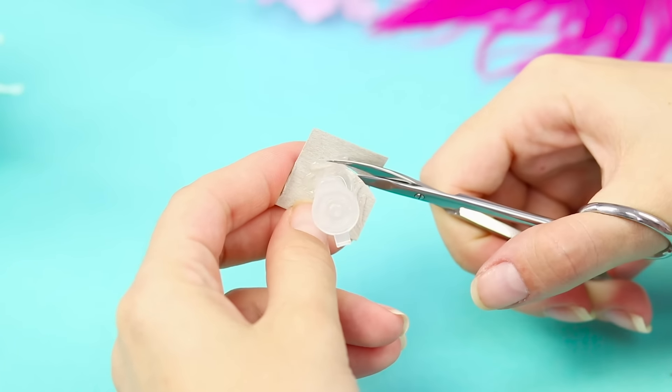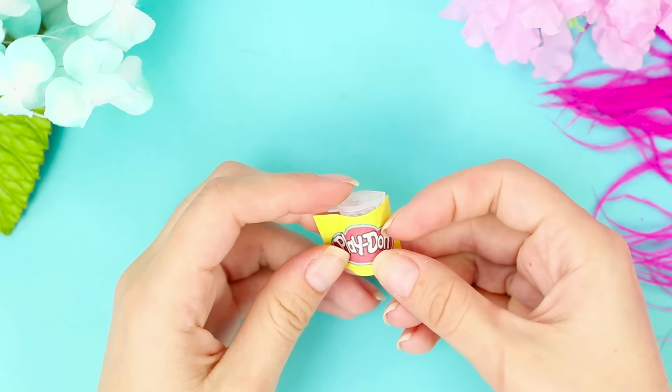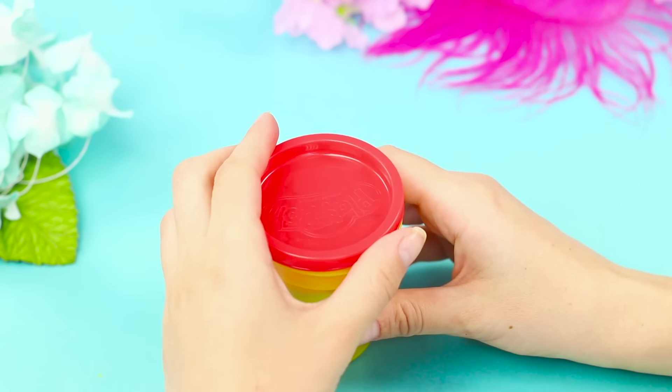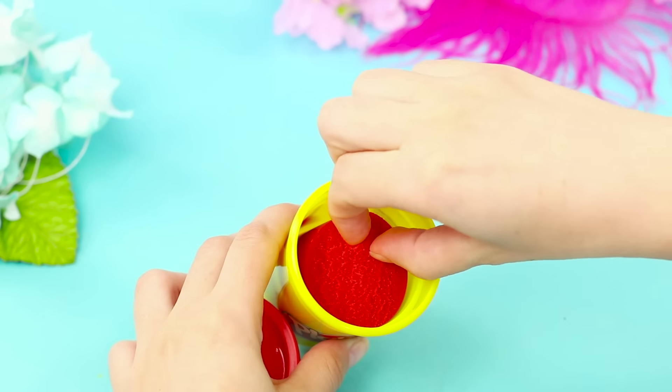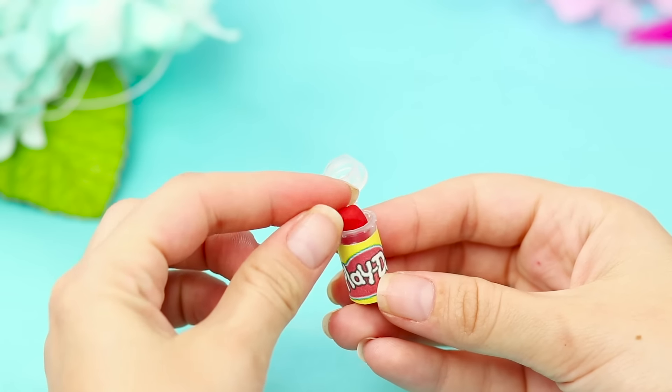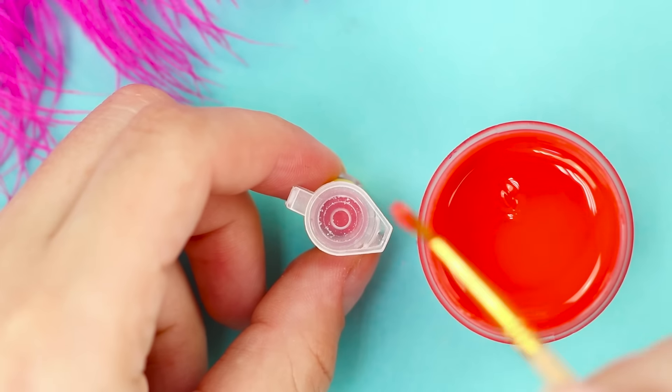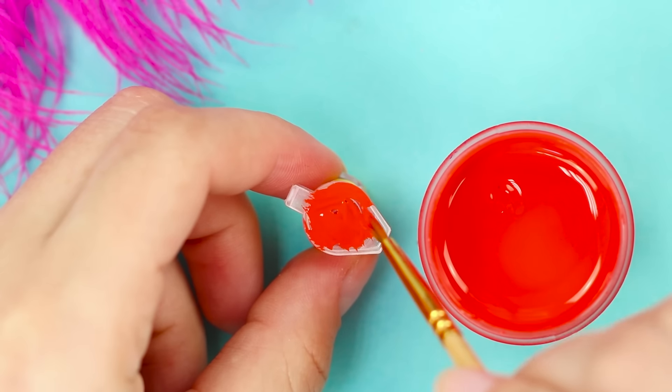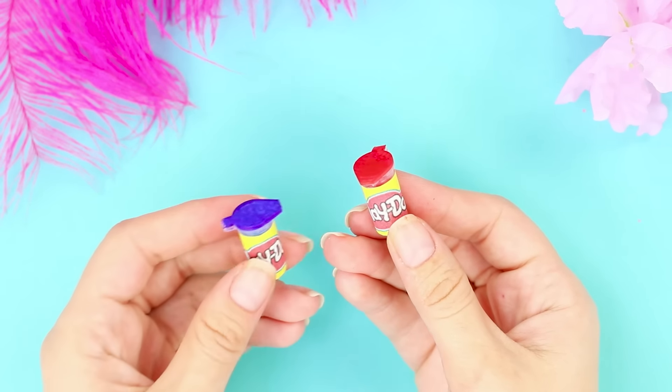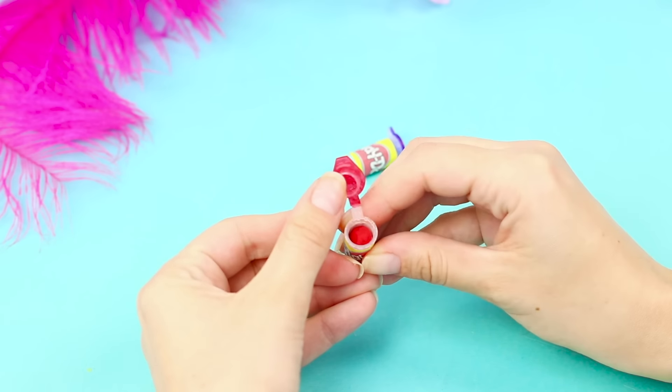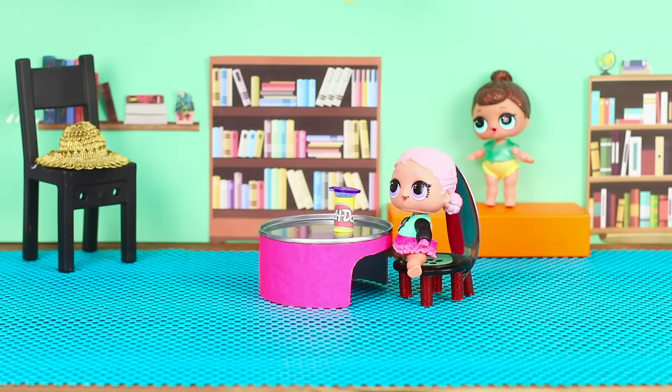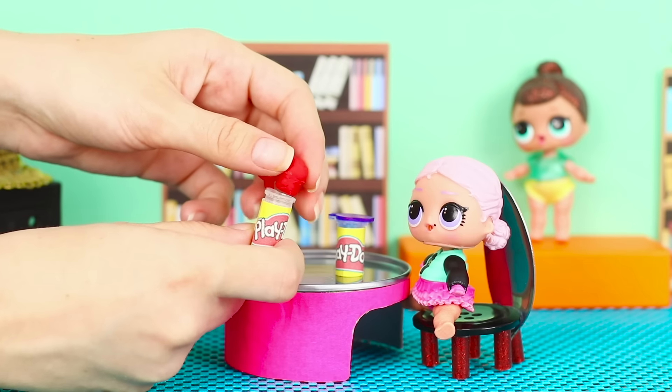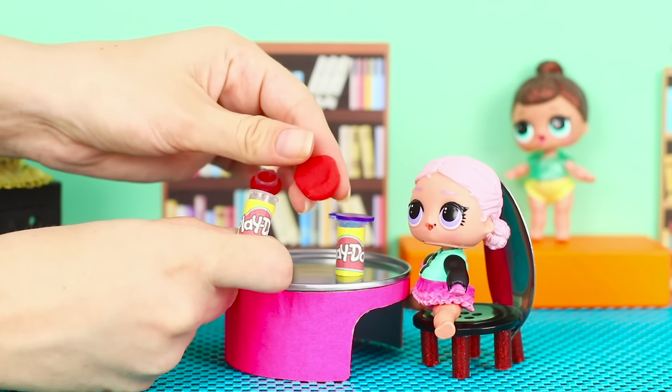When the glue dries, carefully cut the cardboard along the outline. Glue the sticker to the jar. Fill it with Play-Doh. Paint the cap the color of the Play-Doh so it looks just like the real container. Small supplies for the small doll. What can she make out of it?